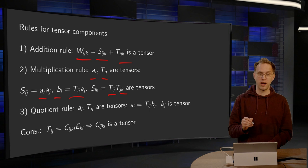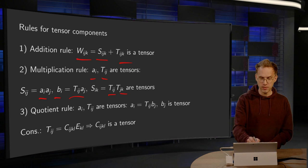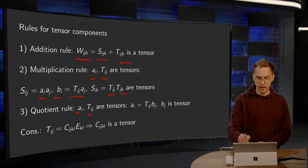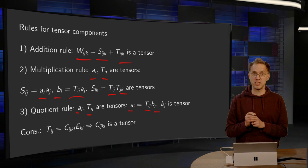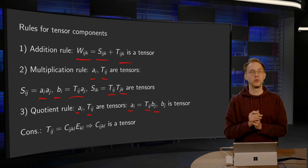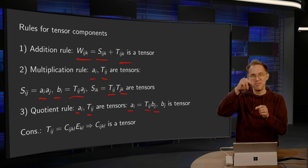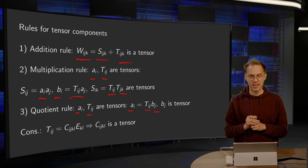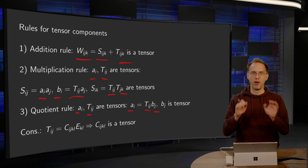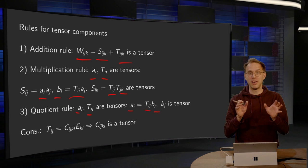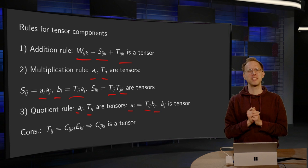And the quotient rule, how does that work? Well, if you have ai and Tij tensors, then you can compute ai equals Tij times bj, and then this bj is in fact also a tensor. That's called the quotient rule. Of course, because you would like to divide by the Tij, so you get something like ai divided by Tij equals bj, a new tensor. Of course you cannot divide, you cannot do something like that, so we have to be a bit careful there.